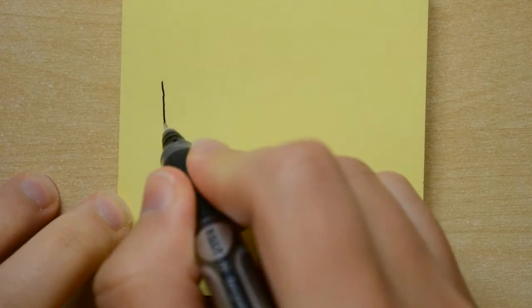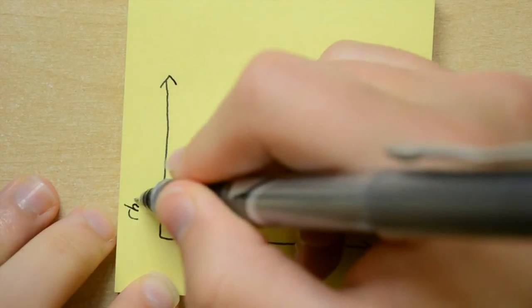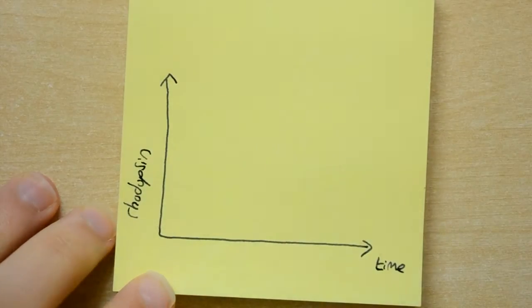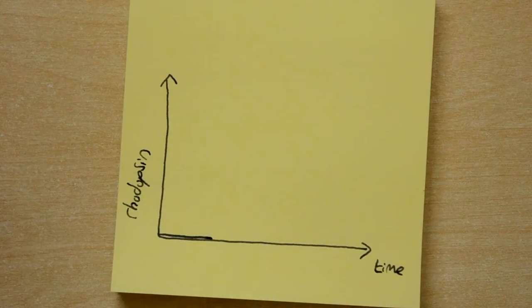Let's try turning this into a graph. On the x-axis we'll put time, and on the y-axis we'll put rhodopsin, which is the chemical the rod uses. In a bright environment, rhodopsin is used up as soon as it's formed, so the level of rhodopsin is overall very low.